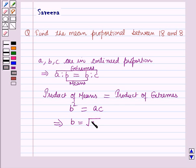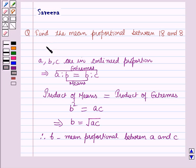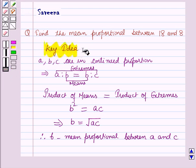Therefore, b is called the mean proportional between a and c. So this will work as a key idea for solving out this question.